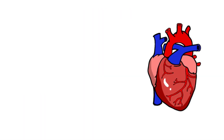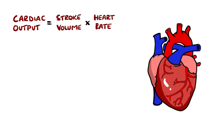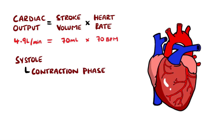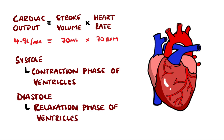Important definitions to know include the cardiac output, which is the volume of blood pumped per minute and is given by the stroke volume multiplied by the heart rate. The stroke volume is the volume of blood pumped in one beat and is typically around 70 milliliters, which when multiplied by a resting heart rate of around 70 beats per minute gives a cardiac output of nearly 5 litres per minute. Systole means the contraction of the ventricles when blood is being pumped out, while diastole is the relaxing or filling time where the ventricles are filling with blood.